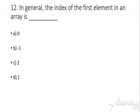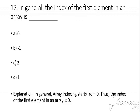Question number 12: In general, the index of the first element in an array is? The answer is 0. Explanation: array indexing starts from 0, so the index of the first element in an array is 0.